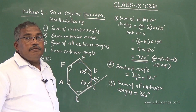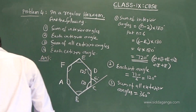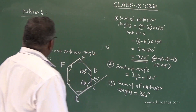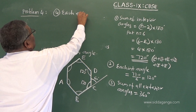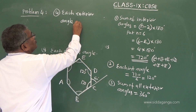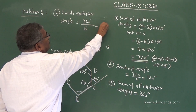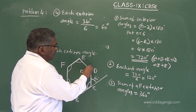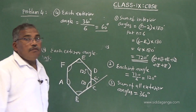For the fourth part — each exterior angle. The total exterior angle sum is 360 degrees, divided by 6 vertices, giving 60 degrees at each vertex. Extending CD or DE gives 60 degrees at every vertex. This completes question number 4.